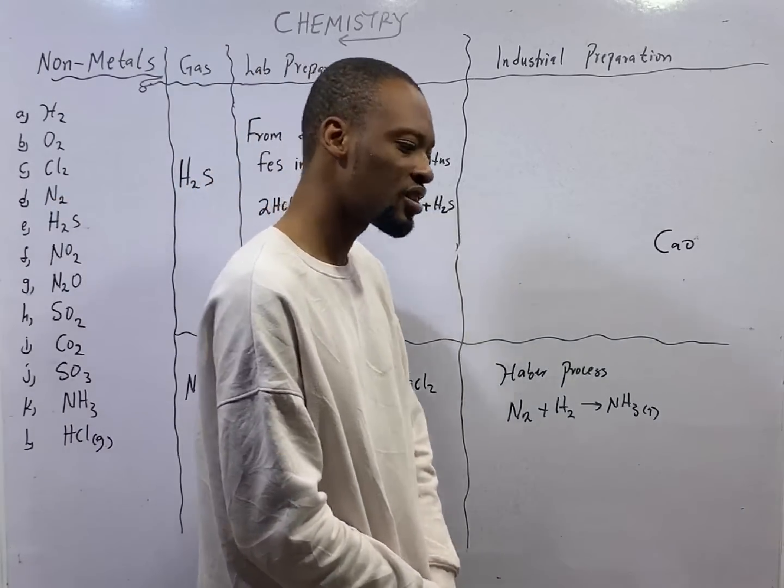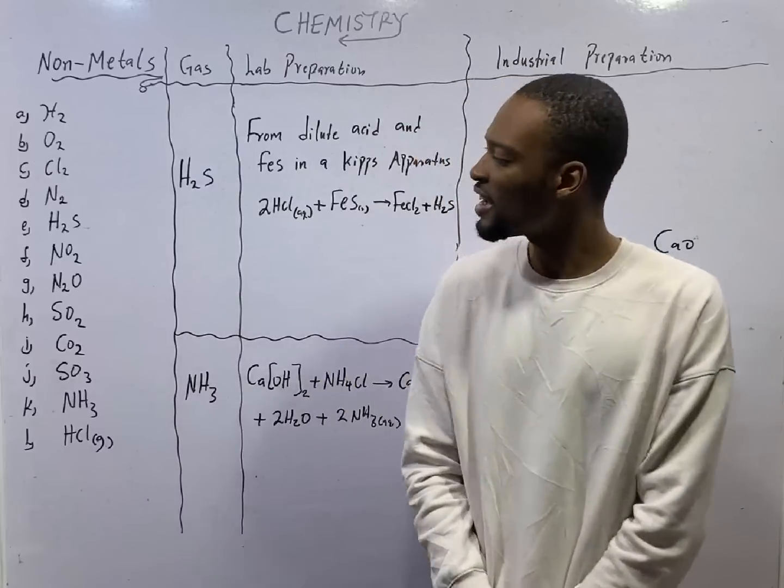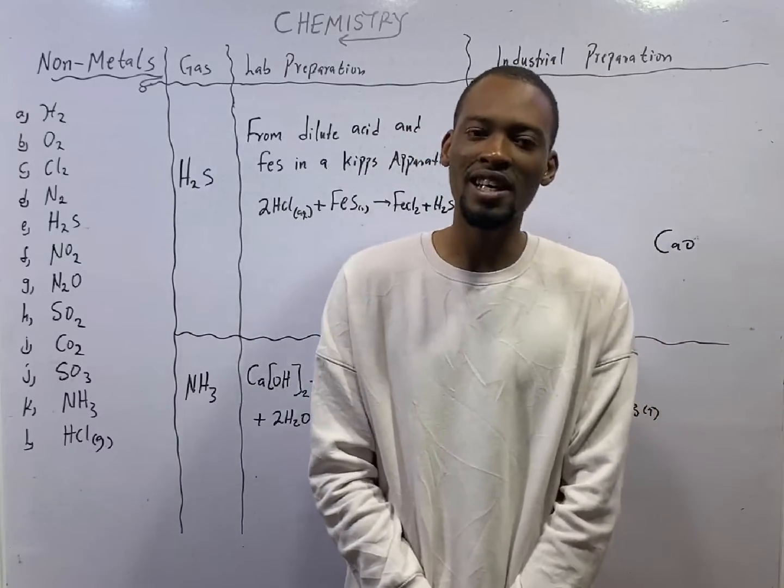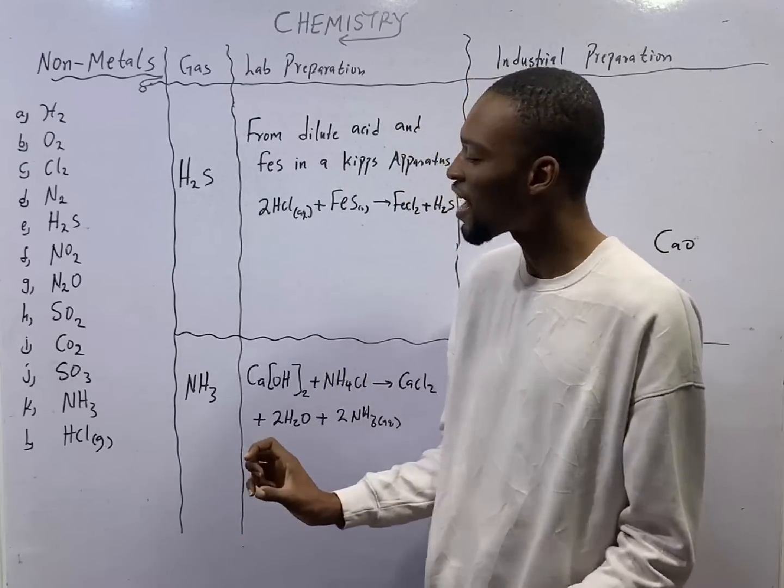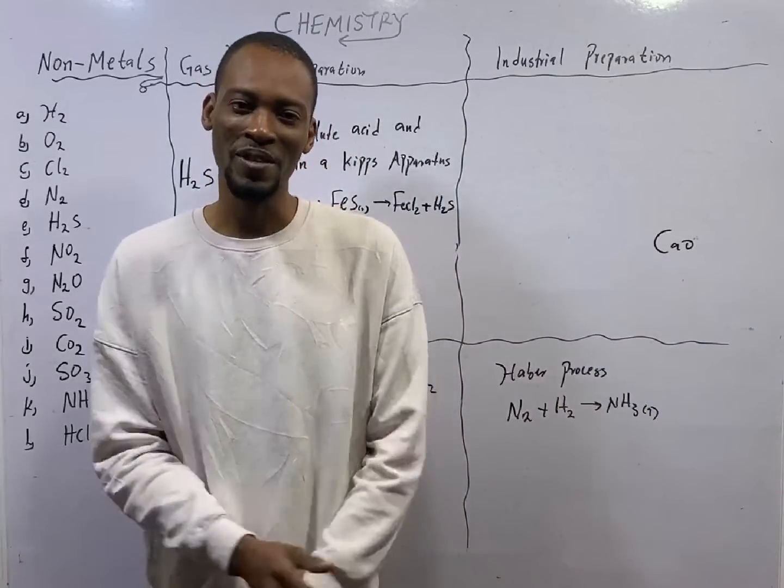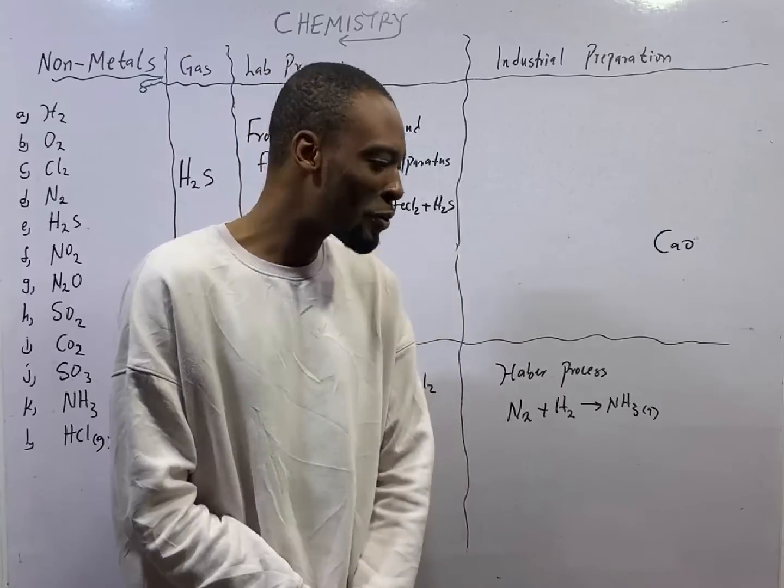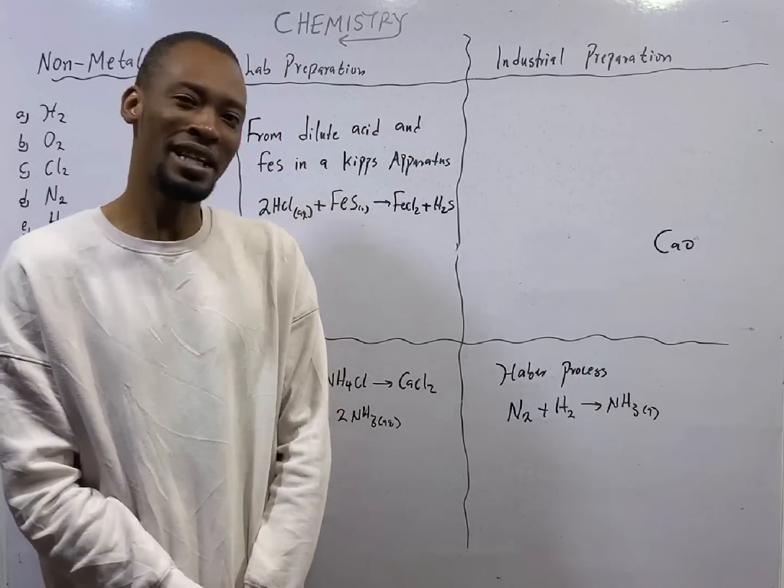Na2CO3 is soda ash. Na2CO3.10H2O is washing soda. All these common names are usually interesting and cool to use in chemistry. Even sweeter than the IUPAC name. IUPAC name can never.